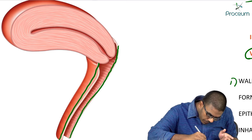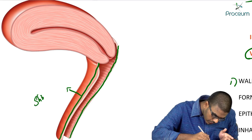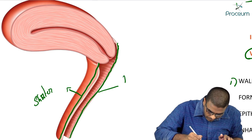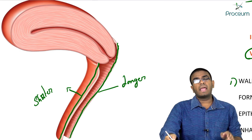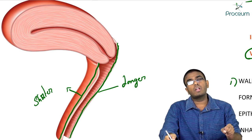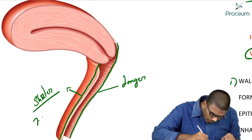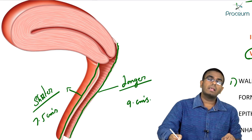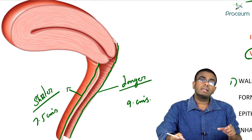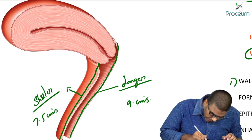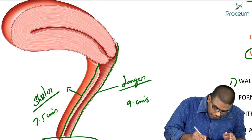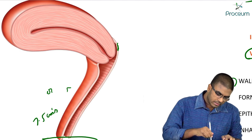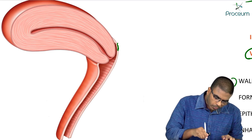The anterior wall of the vagina is approximately 7.5 cm and the posterior wall is approximately 9 cm in length. The vagina is a fibromuscular tube connecting the external genitalia (vulva) with the uterus.